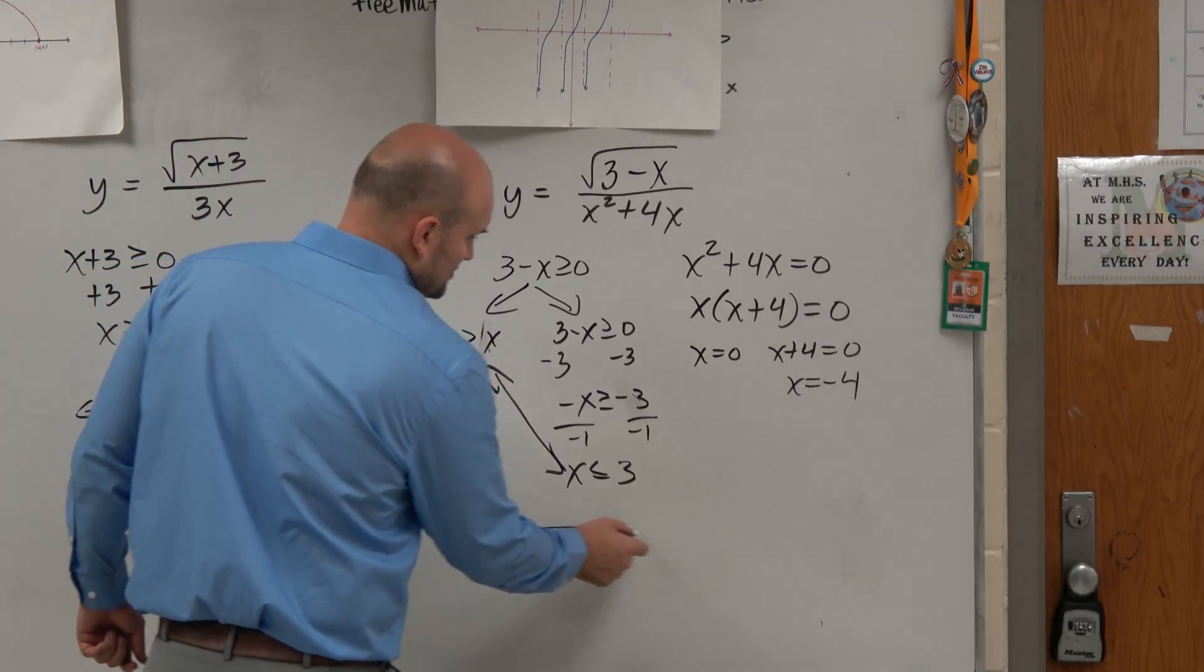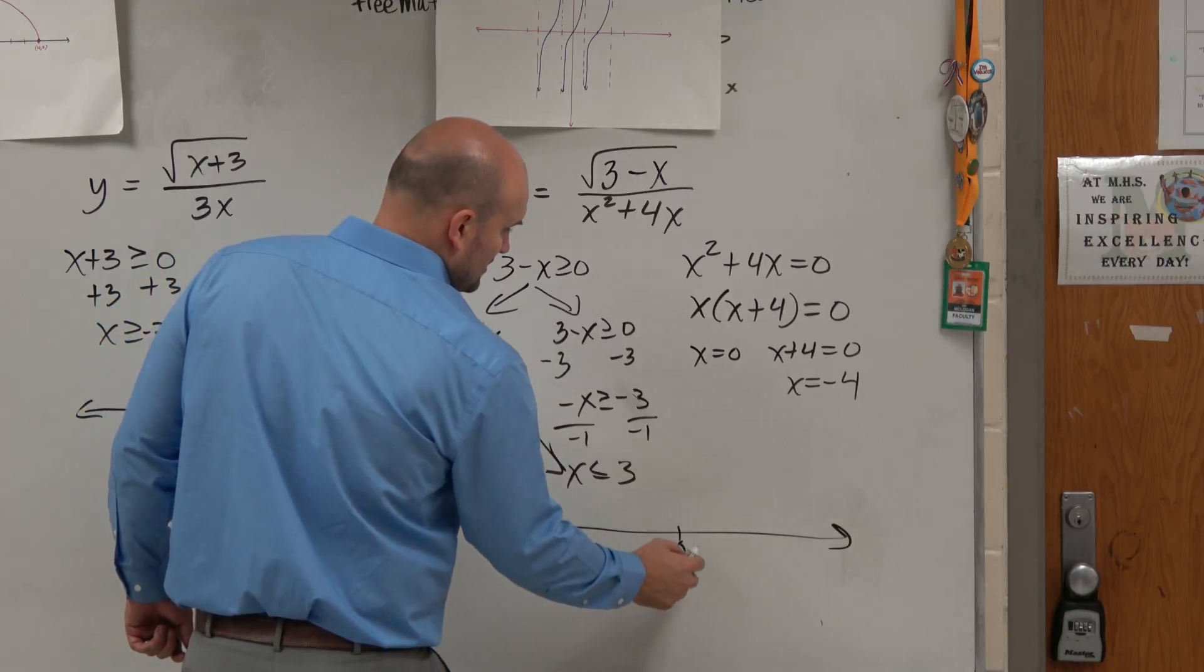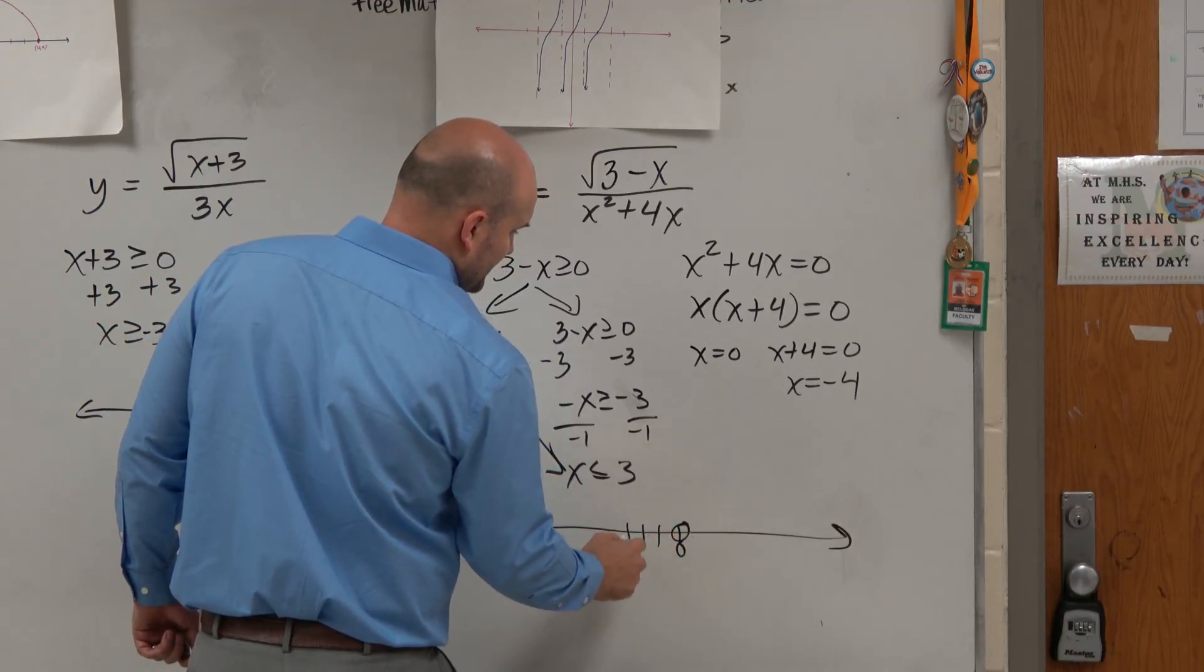So my denominator is equal to 0 when x equals 0, and when x equals negative 4. So I'm going to put those holes here on my graph. We have a 0 and 1, 2, 3, 4.